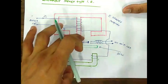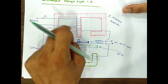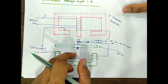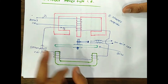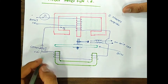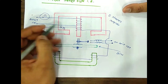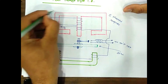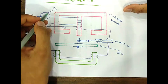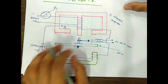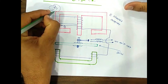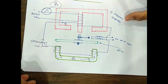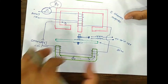The upper E-shaped magnet carries both the primary winding and secondary winding. The primary winding is the relay coil and the secondary winding is wound separately. The primary carries the relay current i1, which produces the flux phi1 in this particular magnet.